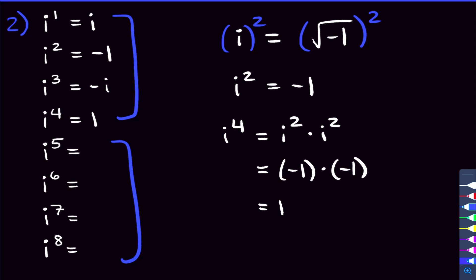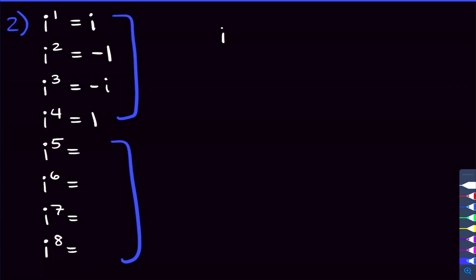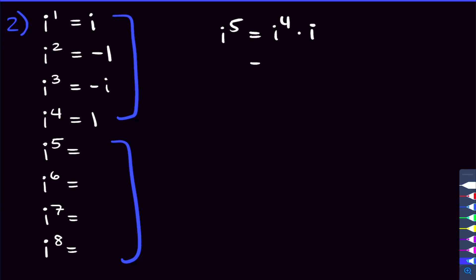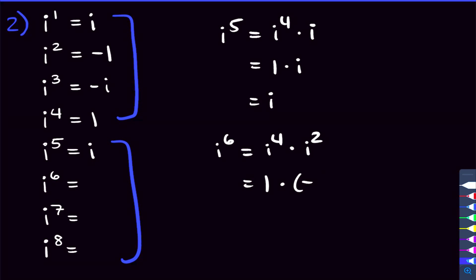For i to the fifth through i to the eighth, we just start pulling out i to the fourth, since i to the fourth is 1. For example, i to the fifth equals i to the fourth times i, which is 1 times i — just i. Similarly, i to the sixth equals i to the fourth times i squared, giving negative 1. The cycle of four keeps repeating for every subsequent group: i to the ninth through twelfth, and so on.